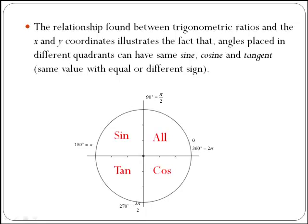The relationship found between trigonometric ratios and the x and y coordinates illustrates the fact that angles placed in different quadrants can have the same sine, cosine, and tangent, with the same value but equal or different sign.